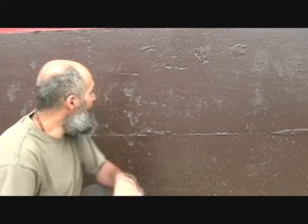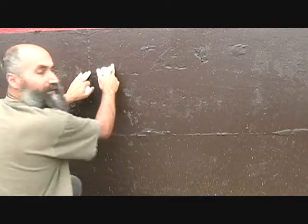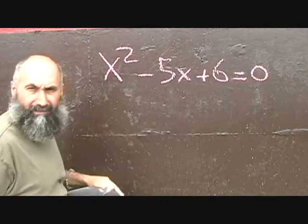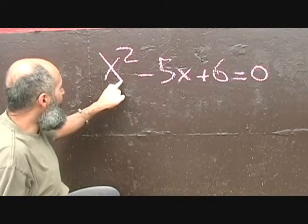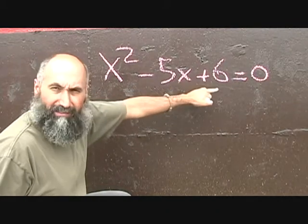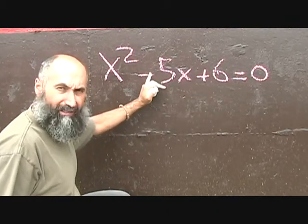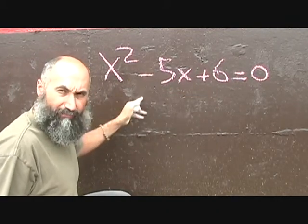We just did x squared plus 5x plus 6 equals 0. Now let's change it up slightly and see what happens. We've got x squared minus 5x plus 6 equals 0. All I did was change the plus sign to a minus sign for this problem.